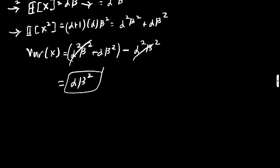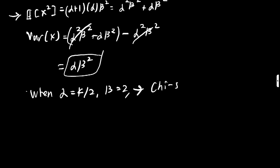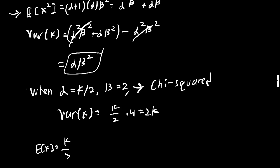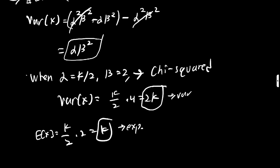Something nice happens here: in the gamma distribution, if alpha equals k over 2 and beta equals 2, this is a chi-squared distribution — a specific case of gamma. Plugging these values in, the variance becomes k over 2 times 4, which is 2k, and the expected value becomes k over 2 times 2, which is k. So those are the well-known mean and variance of the chi-squared distribution.